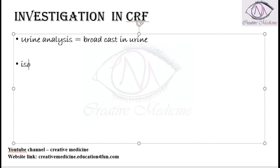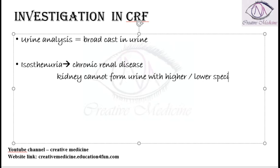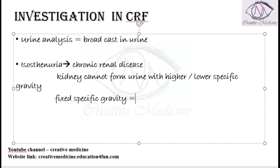Then there is isosthenuria seen. Isosthenuria is a state where chronic renal disease is seen in the patient. Because of the chronic renal disease, the kidney cannot form urine with higher or lower specific gravity — it can only form urine with a fixed specific gravity. Here the specific gravity of the urine formed by the kidney is fixed at around 1.010, and this is isosthenuria.